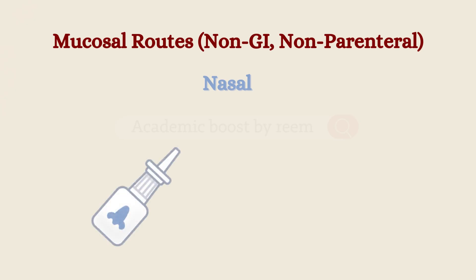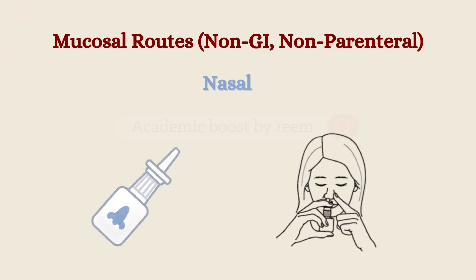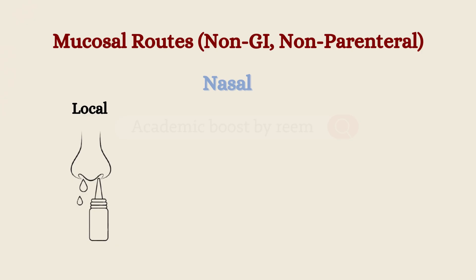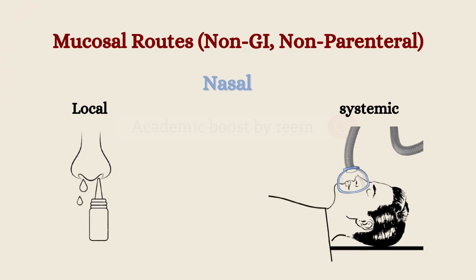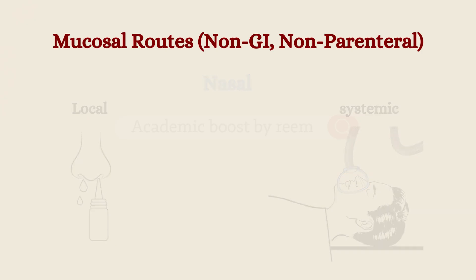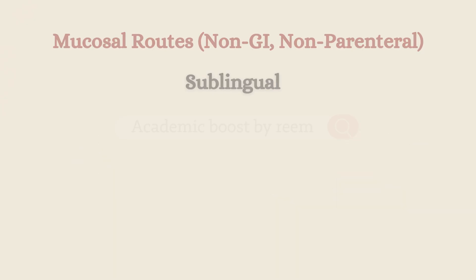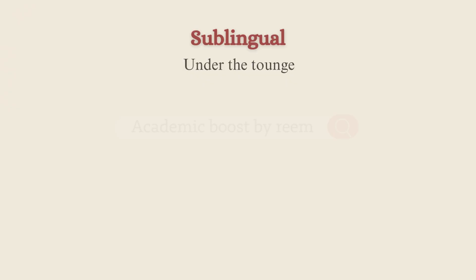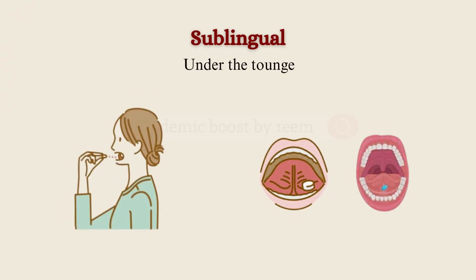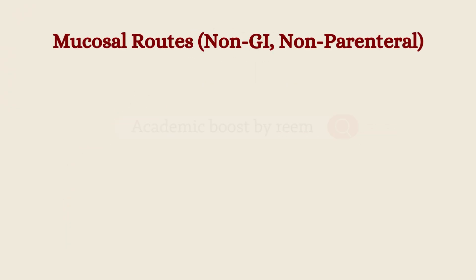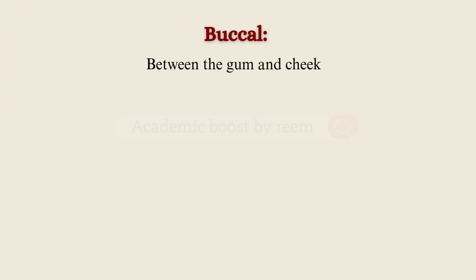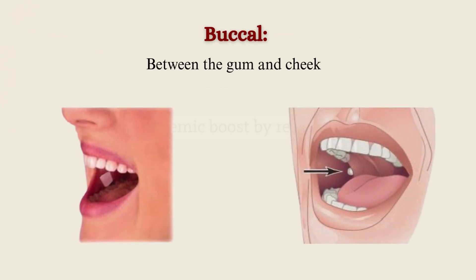The mucosal routes are neither enteral nor parenteral but use mucous membranes. First, the nasal route, in which the drug is administered into the nose for either local or systemic effect. The sublingual route is when the drug is placed under the tongue and not swallowed. The buccal route is when the drug is placed between the gum and cheek, also not to be swallowed.